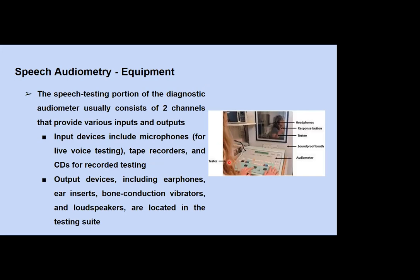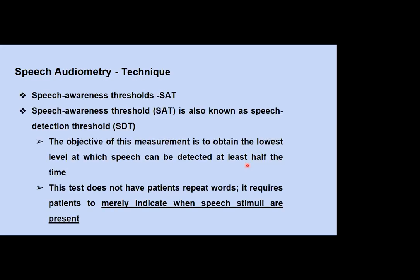A typical speech audiometer is placed in the control room. It has a microphone and other input devices such as a CD player or tape recorder through which speech stimuli can be presented. These are delivered through output devices placed inside the test room, which include earphones placed on the ears, insert earphones inserted into the ear canal, bone vibrators, or loudspeakers. The speech stimuli are presented through these output devices or transducers to the person being tested.